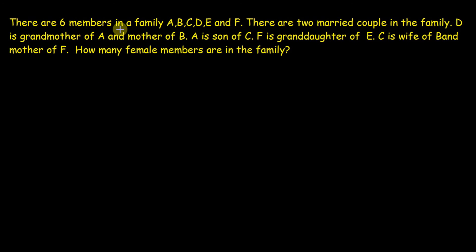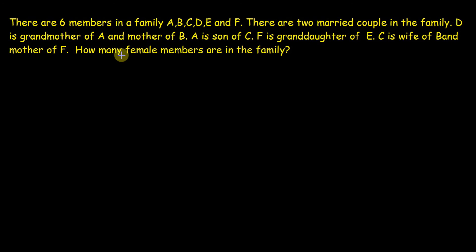Our next question: there are six members in a family — A, B, C, D, E, and F — and there are two married couples. D is the grandmother of A and mother of B. A is son of C. F is granddaughter of E. C is the wife of B and mother of F. The question is: how many female members are in the family? To solve this, we need to draw a family tree.